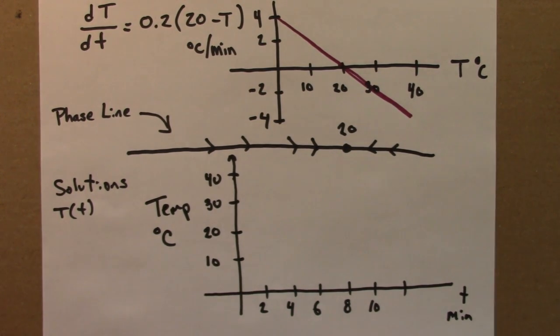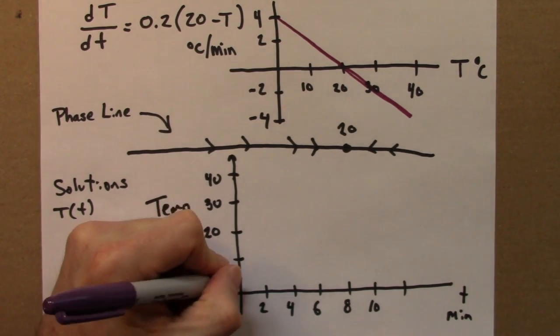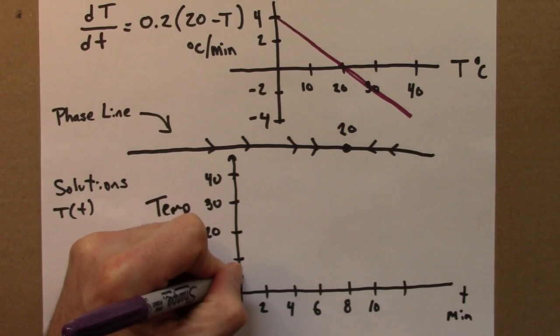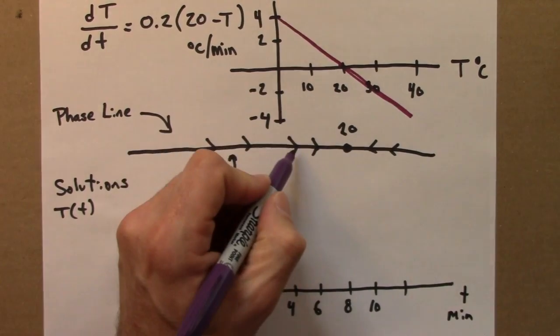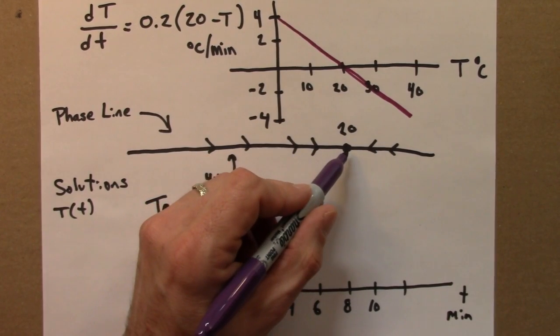So I know that, let's say, do this one in purple, if my starting value is 5, so I'm going to start somewhere here, I know I'll increase until I get to 20.